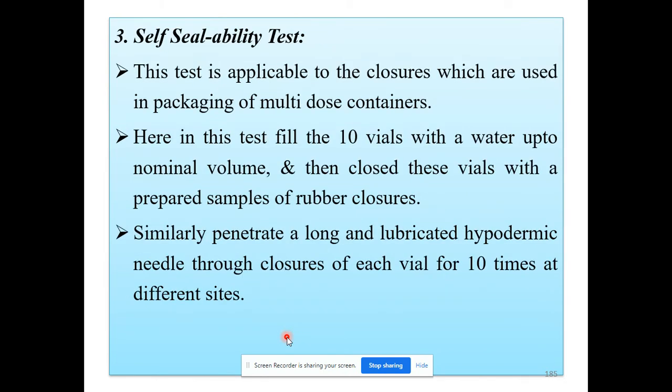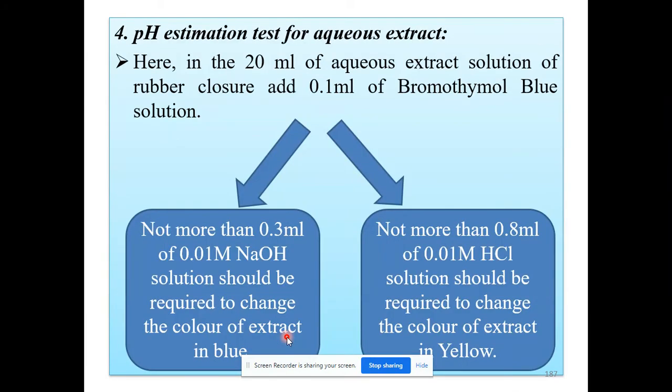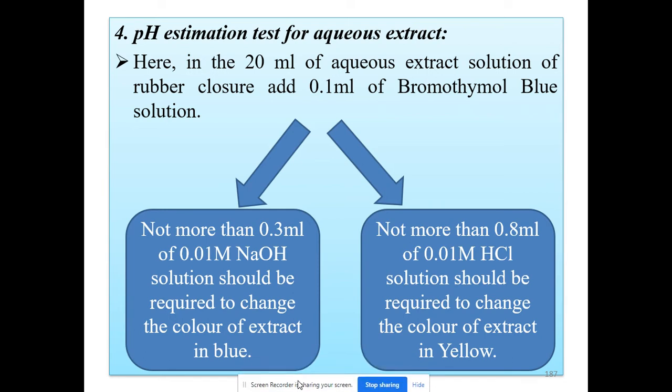This was the third quality control test for rubber closure — the self-sealing ability test. The fourth quality control test is the pH estimation test for the aqueous extract.